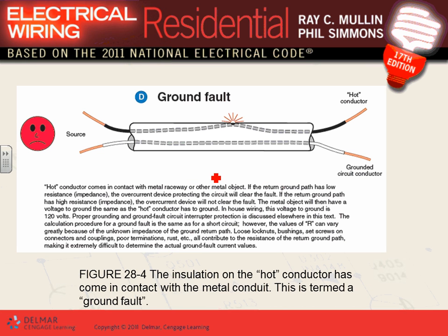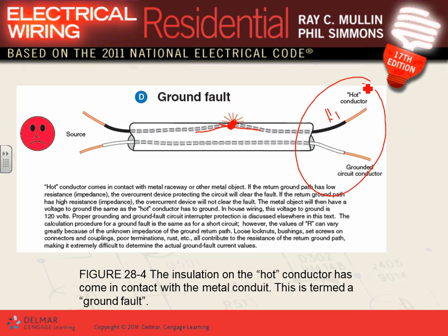Ground fault: you're pulling conductors in a conduit and you compromise the integrity of your insulation. Your hot conductor is now touching the conduit — that's a ground fault condition. The ground fault current can range from 50% of the short circuit all the way to 100%, equivalent to the short circuit, but it's typically a little lower depending on the impedance of the conduit and the contact point.